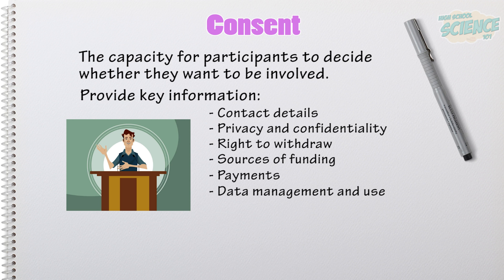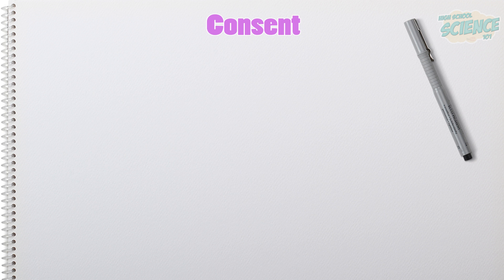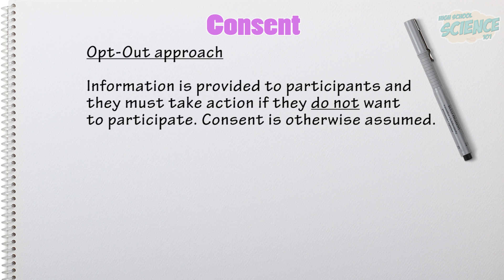You should also inform participants of the likelihood of your research being published and what you think the foreseeable benefits are of your research. Sometimes an opt-out approach is used, where the information is provided to potential participants but they must actively tell you that they don't want to be involved — otherwise their consent is assumed.